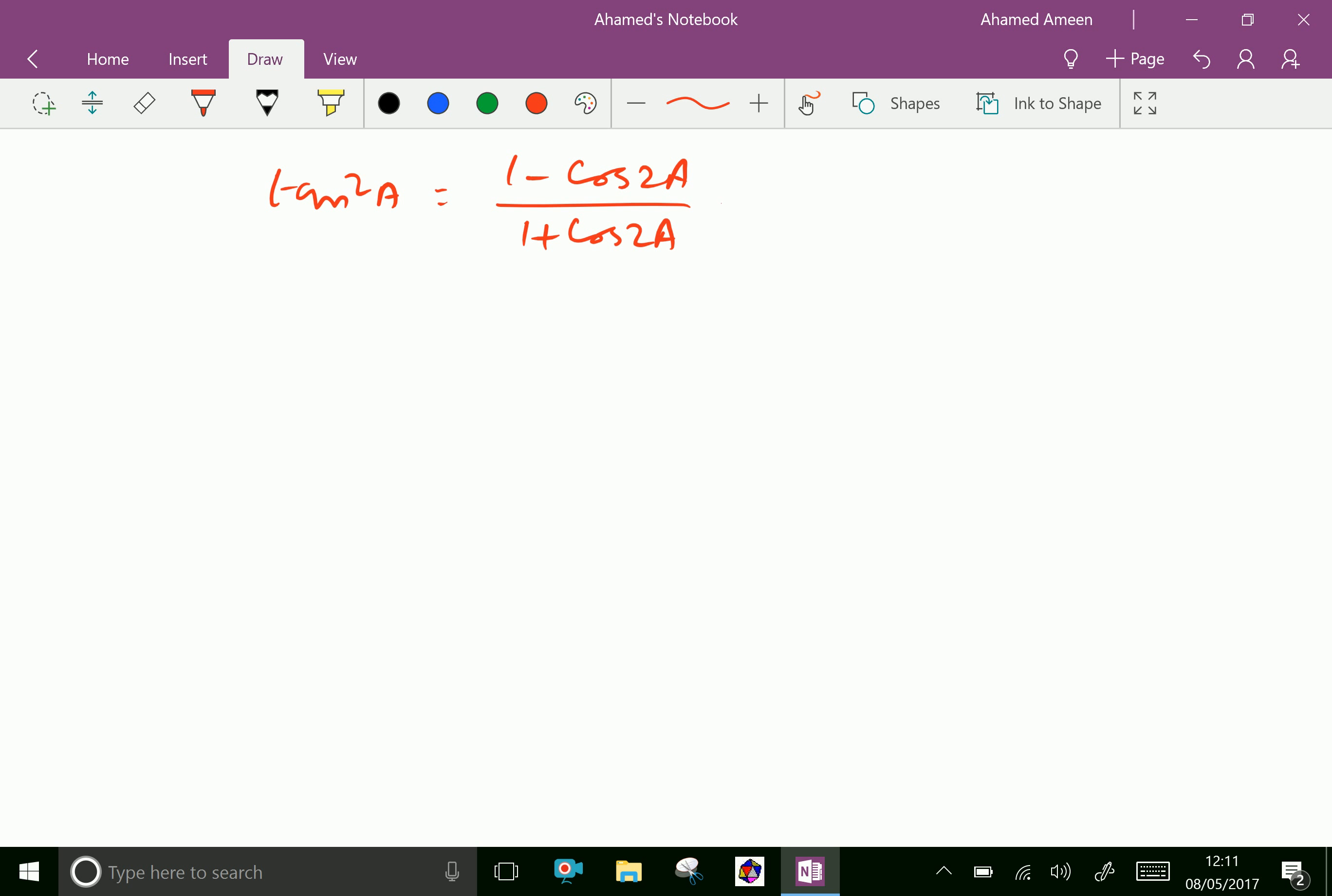Now we will verify this identity using a suitable value for angle A. Let A equal 45 degrees. The left side is tan squared 45 equals 1 minus cos of 2 times 45 over 1 plus cos of 2 times 45.